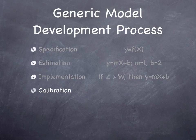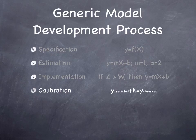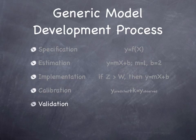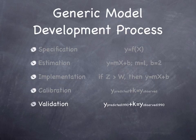Then we want to calibrate the model — how well does our model match reality? How well does y-predicted match y-observed? If y-predicted is less than y-observed, we might need to add some sort of adjustment factor. We also want to validate the model: not only how did it compare in the base year, but in some previous year. For example, how does y-predicted for 1990 compare with observed data for 1990? We might estimate the model based on 2010 data and compare it to 1990 data. If it predicts 1990 reasonably well — if the model has stability over a 20-year period — we have confidence in its ability to predict 20 years into the future. If it doesn't predict well over the past 20 years, we should have no confidence in its ability to predict into the future.